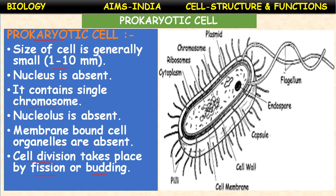These are primitive organisms that come under the prokaryotic cell category. In bacteria, the cell membrane is present, the cell wall is present, and there is no nucleus — only a chromosome or nucleoid is present. There is no nuclear envelope. The size is very small, 1 to 10 micrometers. Nucleolus is absent and membrane-bound cell organelles except ribosomes are absent. Cell division takes place by binary fission: the nuclear material and cytoplasm are equally divided into two parts.